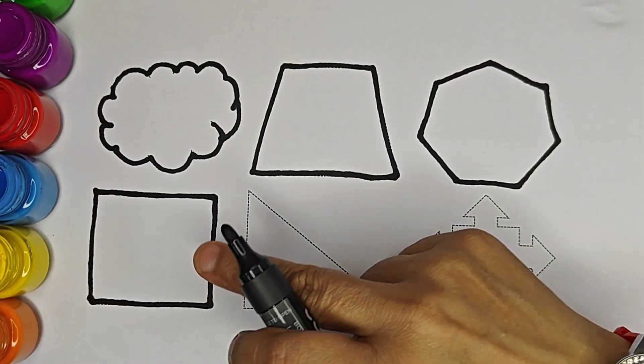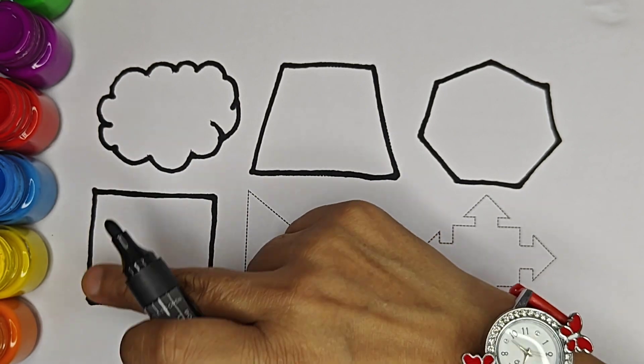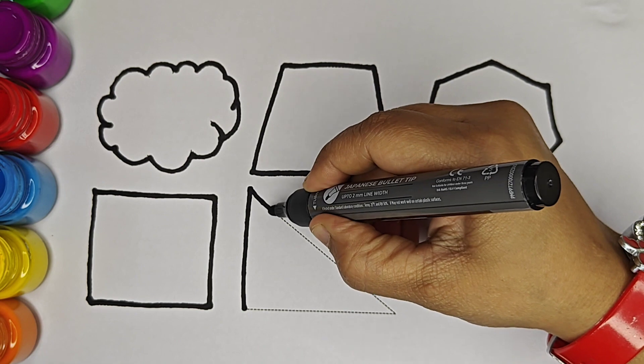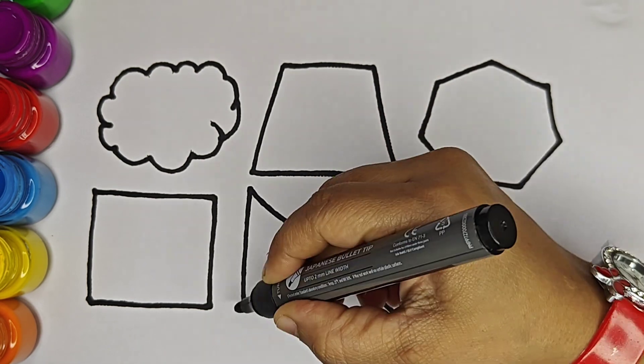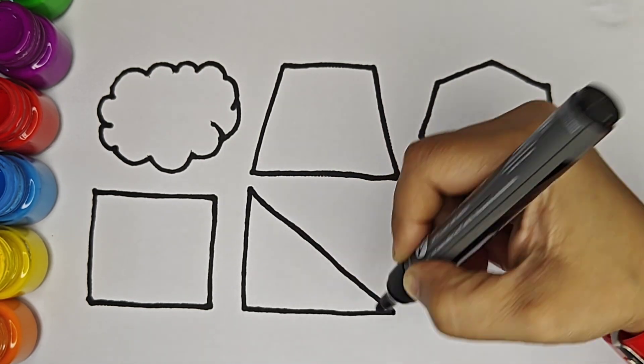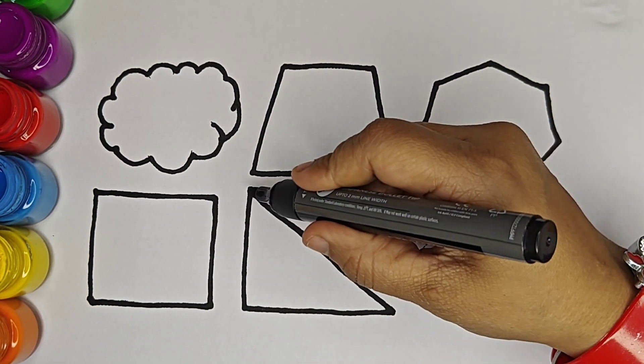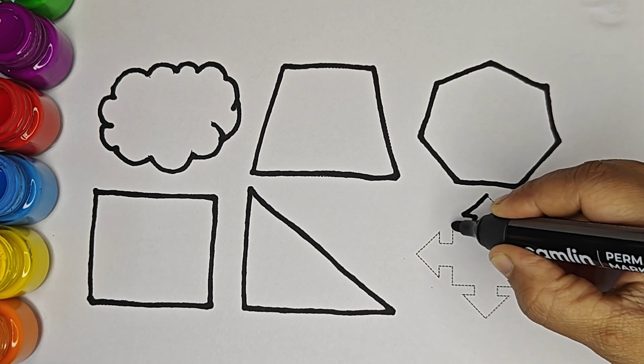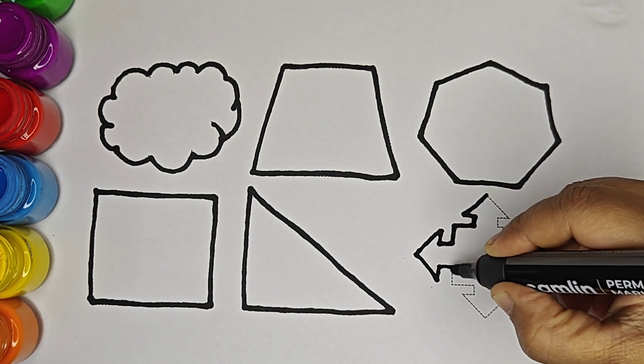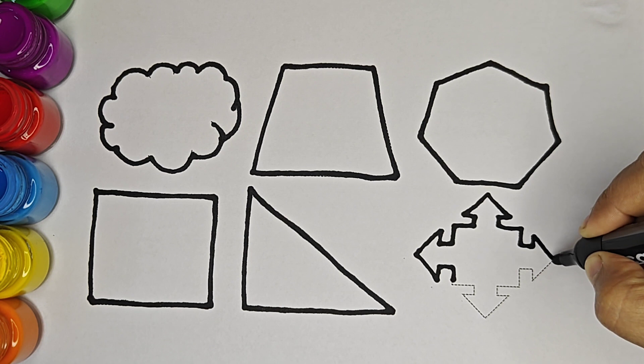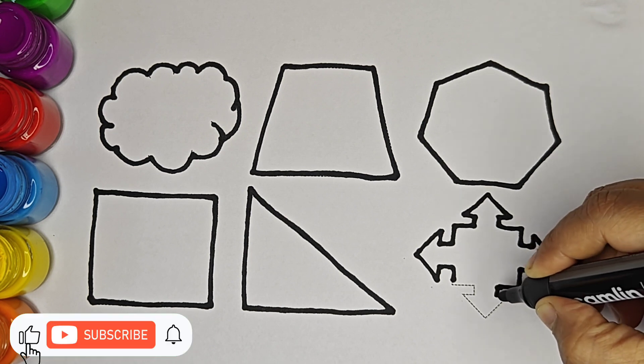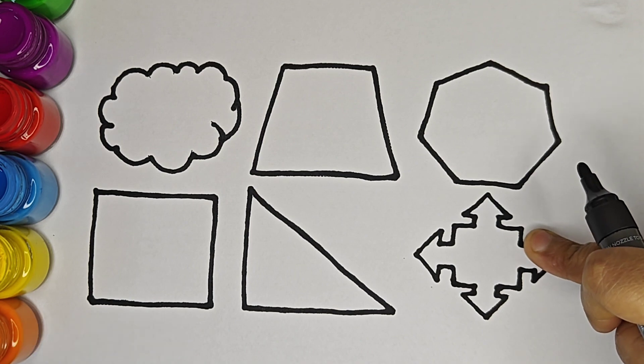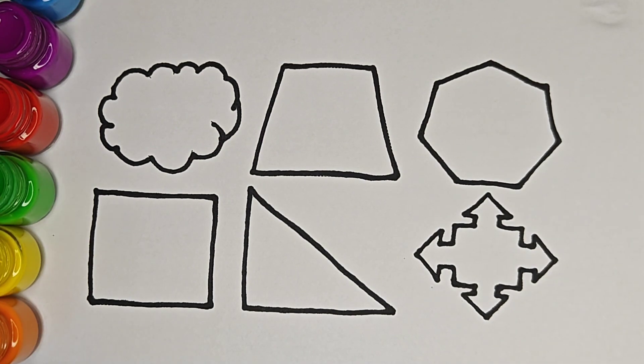This is square. All sides are equal. It has four sides: one, two, three, four. This is right-angled triangle. It has three sides: one, two, three. This is quad arrow callout. Let us color the shapes.